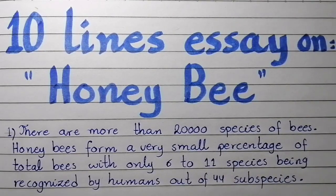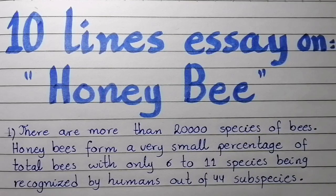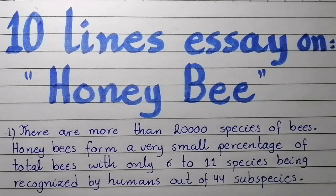Point number one: there are more than 20,000 species of bees. Honey bees form a very small percentage of total bees, with only six to eleven species being recognized by humans out of 45 subspecies.